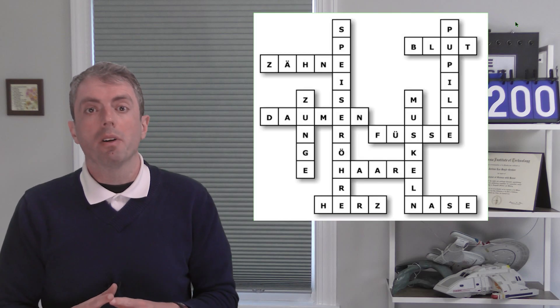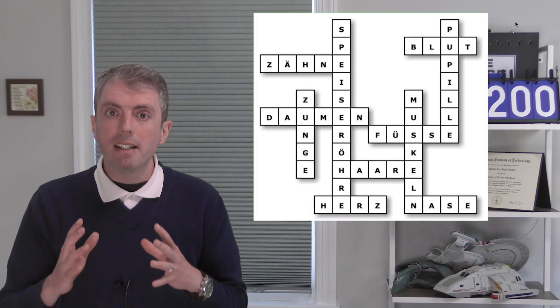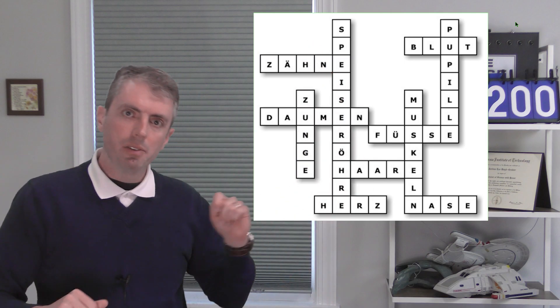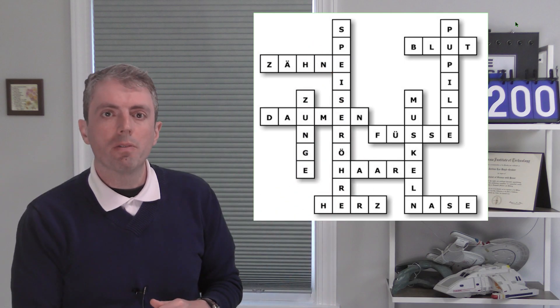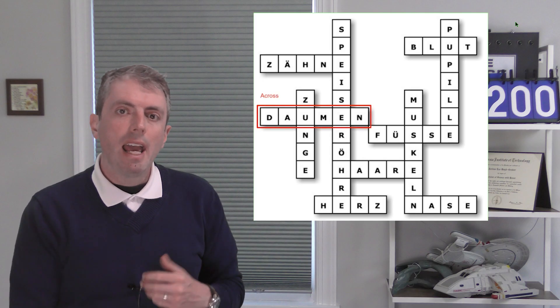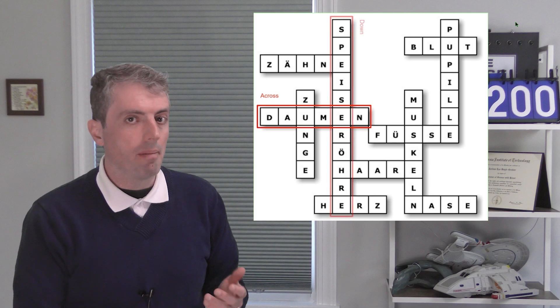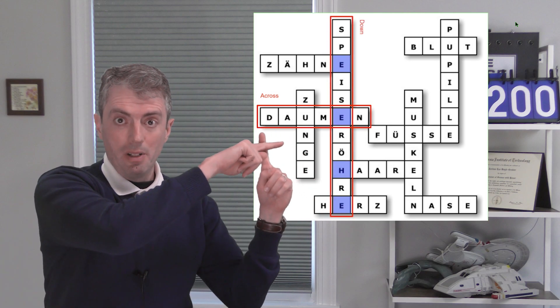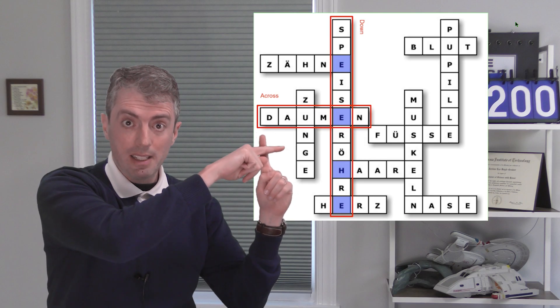If you haven't seen a crossword before, the basic idea is that there are across clues and down clues. Across clues go from left to right in languages like English and German, and down clues go from top to bottom. Whenever a down clue intersects an across clue, the letters need to match.